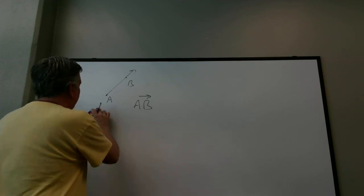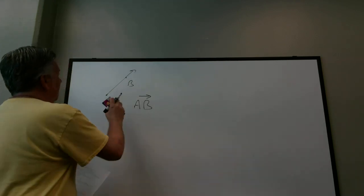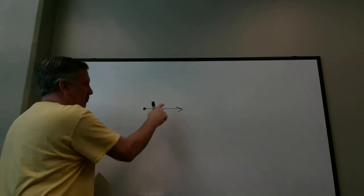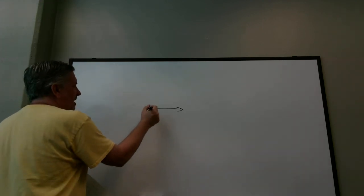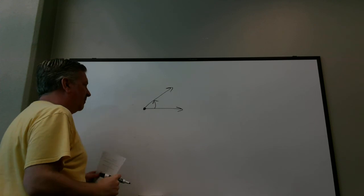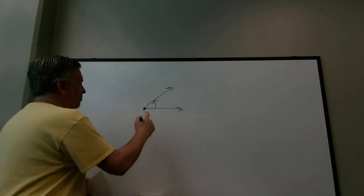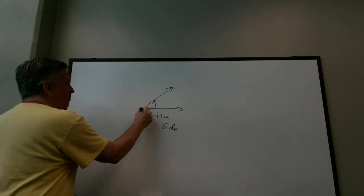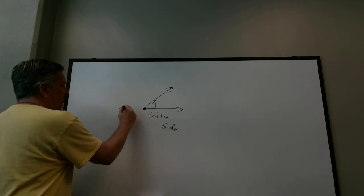The only reason we're defining ray is because it's used in the next definition. The next definition says an angle is formed by rotating a ray around its end point. Imagine a ray drawn horizontally — it starts at a point and continues to a point. It's formed by rotating a ray around its end point. There's the end point and we're rotating. I'll imagine it rotates up. The original ray is called the initial side, and the end of the original ray we're rotating around is called the vertex of the angle.